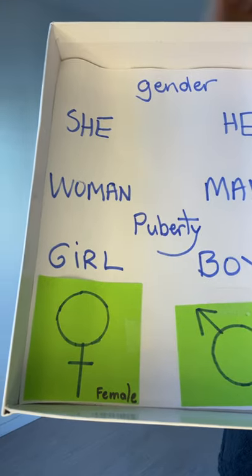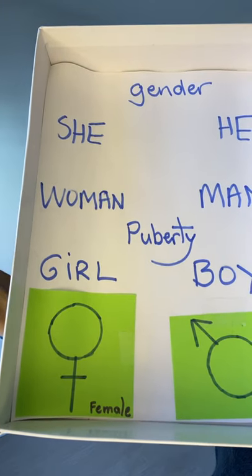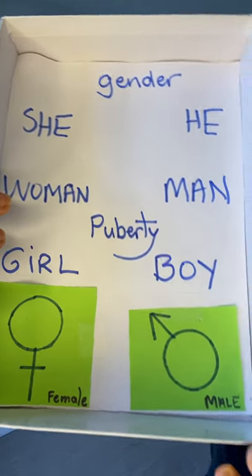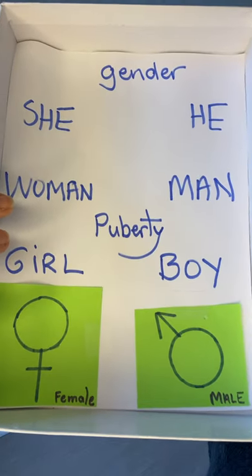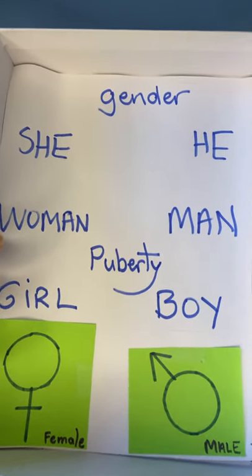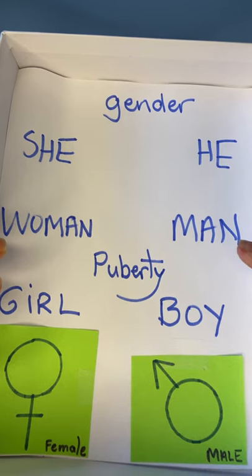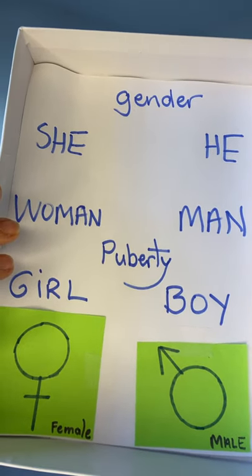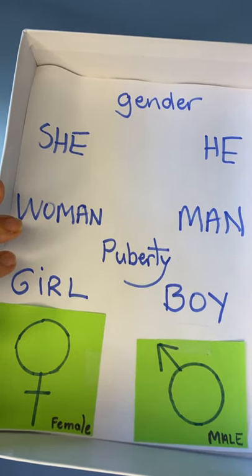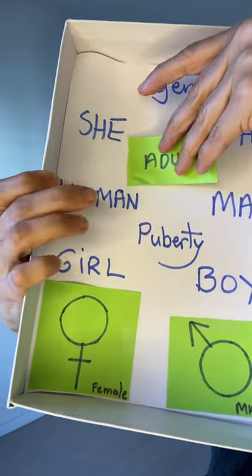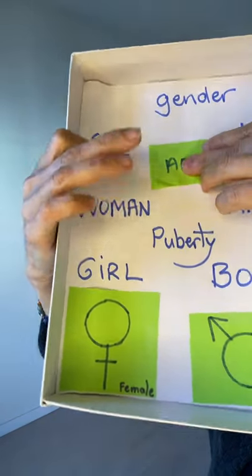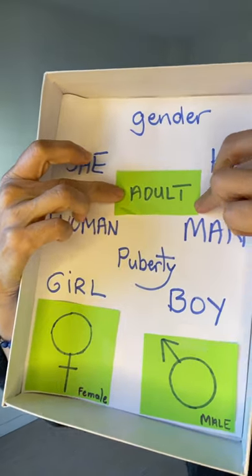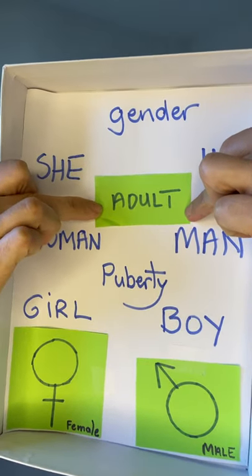And after puberty, the girl becomes a woman, and the boy becomes a man. And then we say that they are adults — they become an adult.